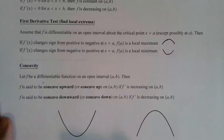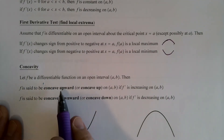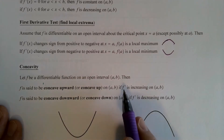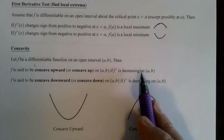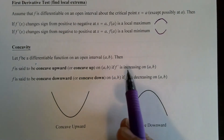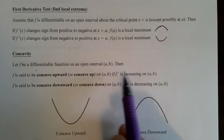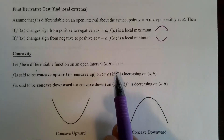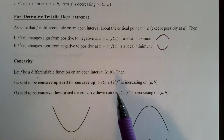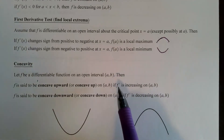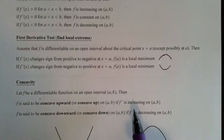And then concavity — don't forget that. If a function is differentiable, it is concave upward if the derivative is increasing on that interval. Be careful: that doesn't mean the derivative is positive. f prime increasing does not mean f prime is positive. If f is increasing, then f prime is positive, but positive is not the same thing as increasing.